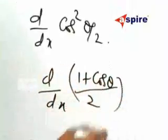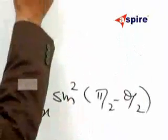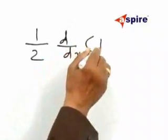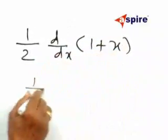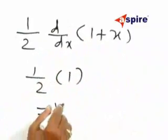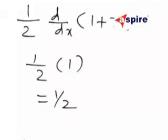That is 1 by 2 d by dx of 1 plus cos theta. X is there, therefore 1 by 2, this is 0, that is equal to 1 by 2.